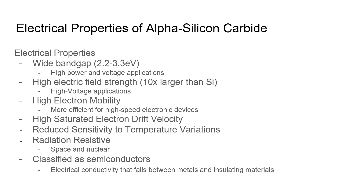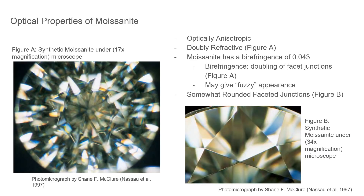Furthermore, moissanite has very many unique optical properties, such as being anisotropic, meaning the grains go in one direction. The image on the left exhibits its double refractive qualities and the image on the right exhibits its rounded facet junctions. One other quality of moissanite is its birefringence of 0.043, meaning it may have a fuzzy appearance.